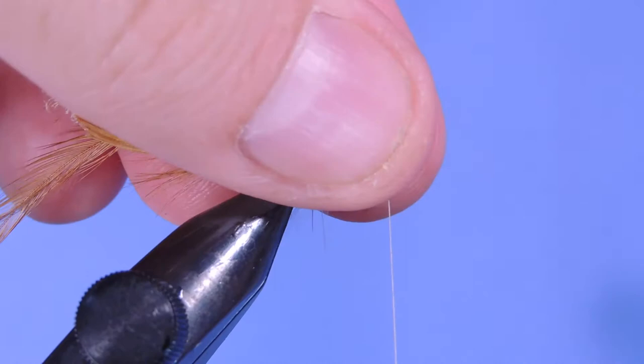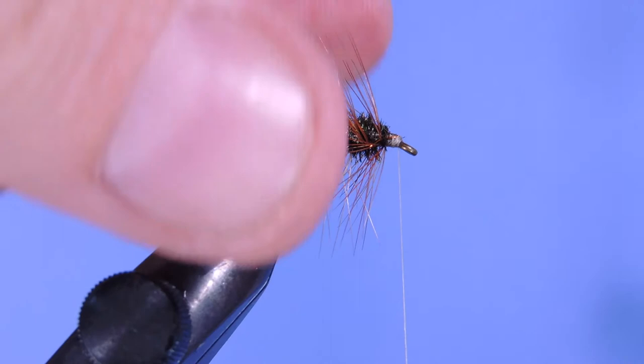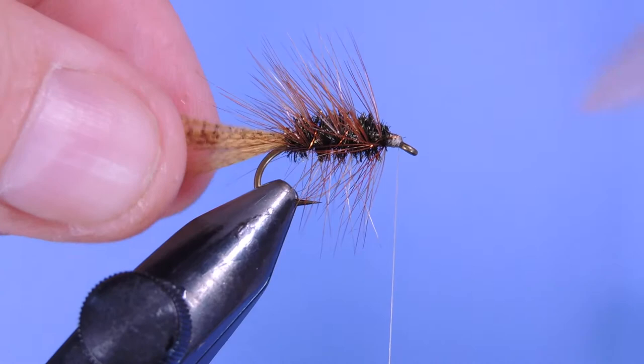Couple wraps, pull the wire back, then we'll helicopter that off. Trim the tail or the hackle off the back.